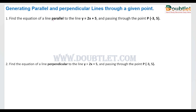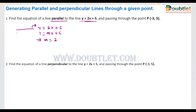In the first problem, we need to find a line parallel to a given line. Suppose the line's equation is y = 2x + 5. The slope-intercept form is y = mx + c, where m is the slope and c is the y-intercept. Comparing both equations, we get m = 2. Suppose this line is L1 and we need to find the equation of L2, which is parallel to L1.